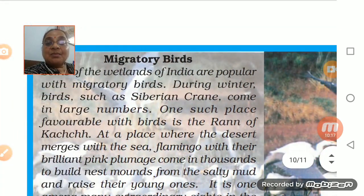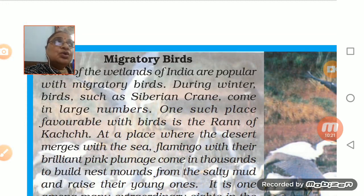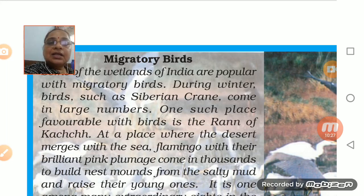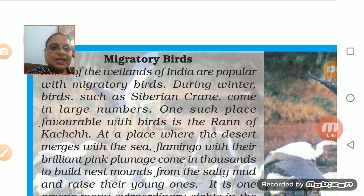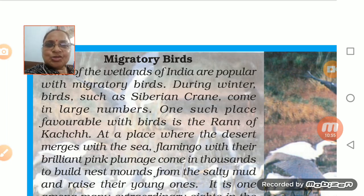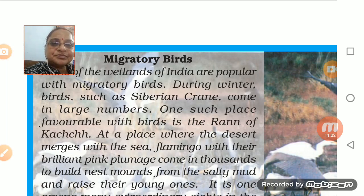Migratory birds - beautiful birds, it is so amazing to see. Some migratory birds coming from nearby areas are really beautiful. Especially in winter, Siberian cranes come in large numbers to the Rann of Kutch near Gujarat. That Kutch area is where they come - the desert where the sea merges with land. That is their favorite place.